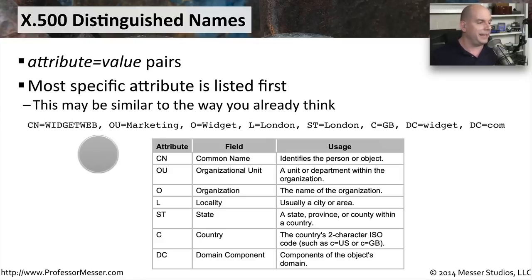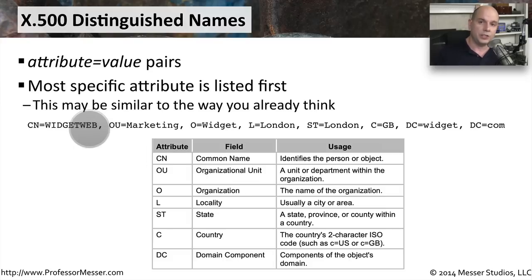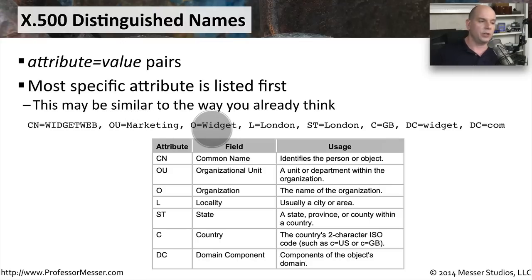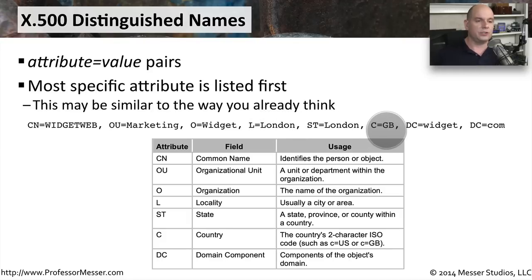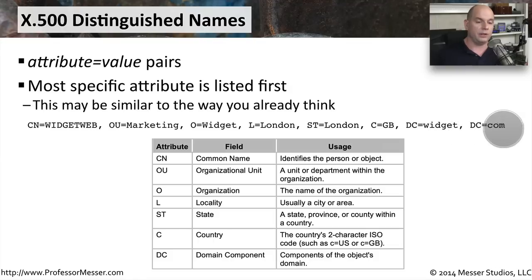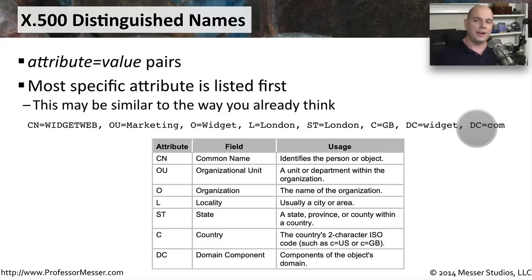It has an attribute at the beginning of CN. CN stands for the common name of that device, so the common name is WidgetWeb — the web server we're specifying. It is in an organizational unit of marketing, in an organization called Widget, located in a locality of London, in a state of London. The country is Great Britain. The domain components are Widget and com, describing this web server as the one used on Widget.com.